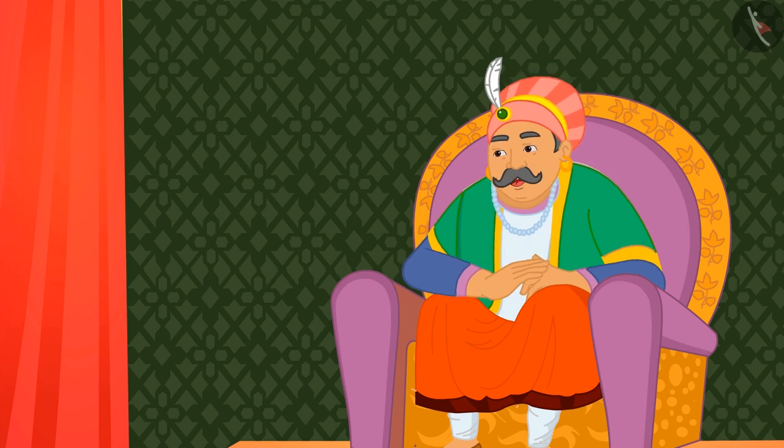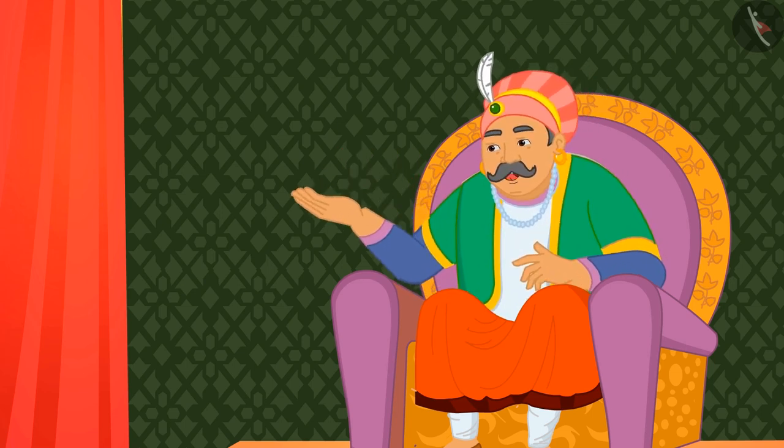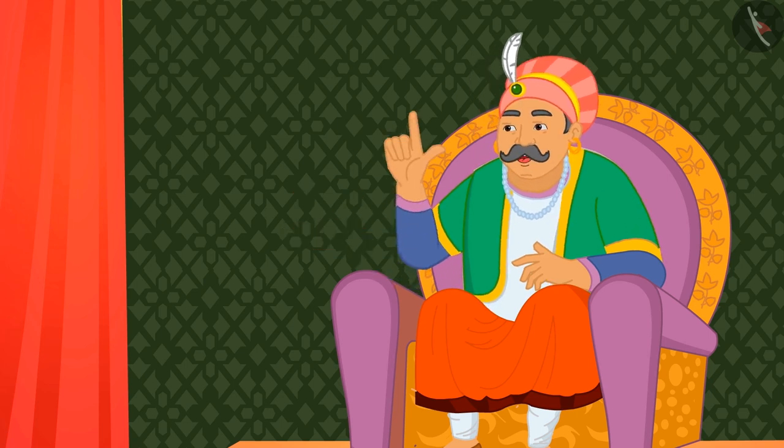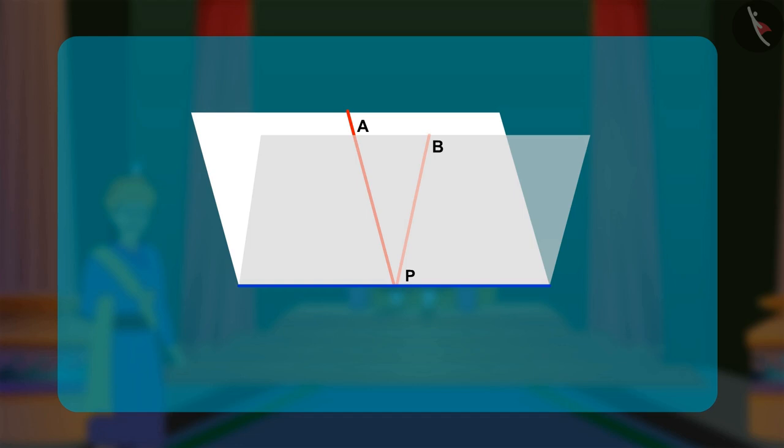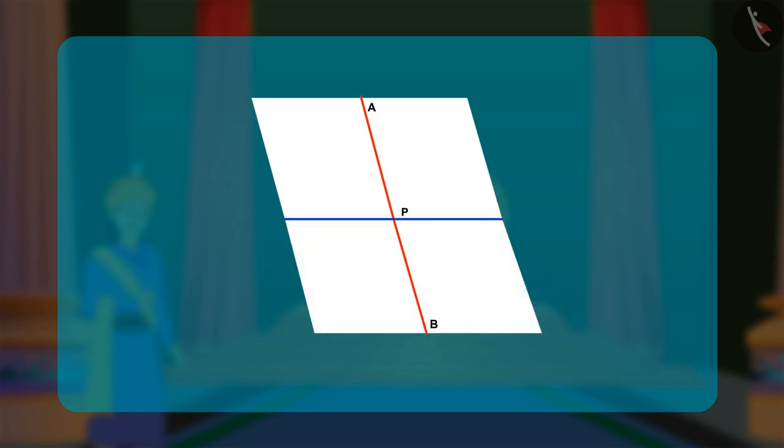Akbar asked Birbal, why do you say the fold through P is perpendicular to AB? Birbal explained that the line AB is reflected onto itself in a reflection in the line formed by the crease. The point P is its own image in this reflection. Since point P is its own image in the reflection, we can say there is a straight angle being formed by the line. Hence, the fold through P is perpendicular to AB.